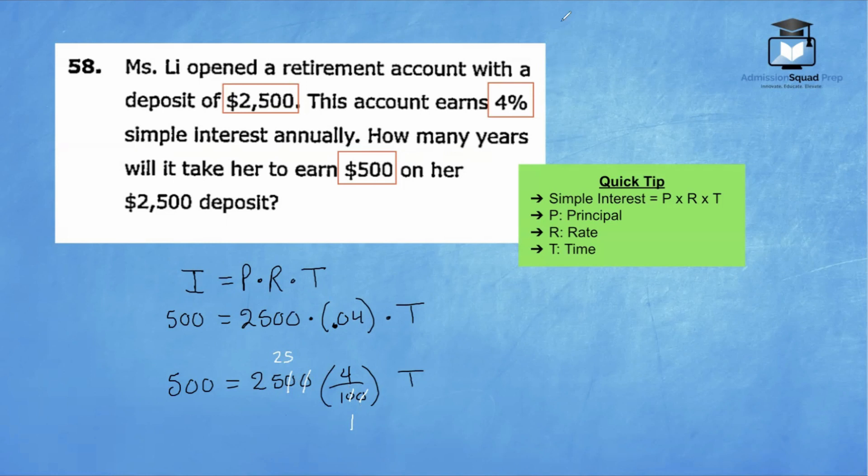So now we can simplify our equation. We have 500 equals 100 T. I got 100 because I went ahead and multiplied 25 times 4. This is a simple one-step equation at this point. So all we need to do is to divide both sides by 100. When the 100s cancel out, 100 divided by 100 is 1, we're left with T equals 5, because 500 divided by 100 is 5. So our final answer is T equals 5.